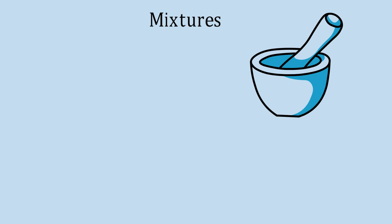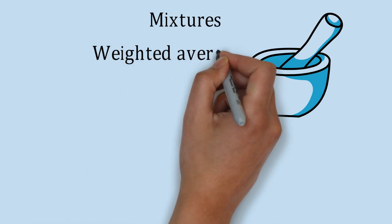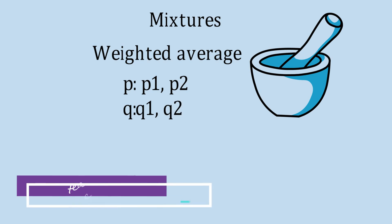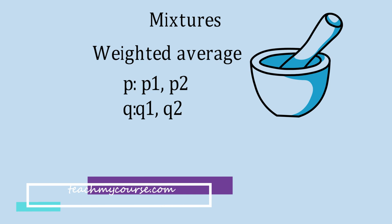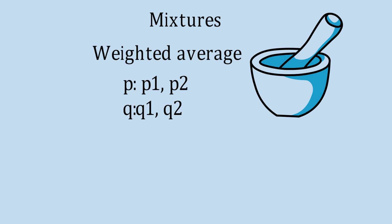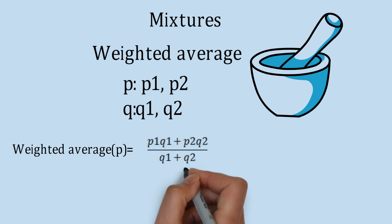That is a simple way of calculating average. Then comes the concept of mixtures — mixtures means there are two types of qualities of an item. And then comes the concept of weighted average. Weighted average is calculated when there are two qualities of an item, Q1 and Q2, with respective prices P1 and P2. The weighted average P equals P1·Q1 plus P2·Q2 upon Q1 plus Q2.